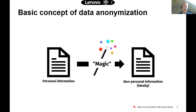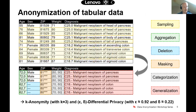The foundational concept behind data anonymization is a bit like magic: you have a dataset consisting of personal information, some transformation happens, and in the end you have non-personal information that can be shared more broadly under data protection regulations. On this slide is a simple medical dataset in tabular form containing age, sex, zip code, weight, and a diagnosis recorded within a hospital information system.